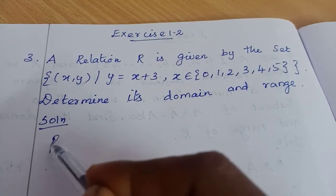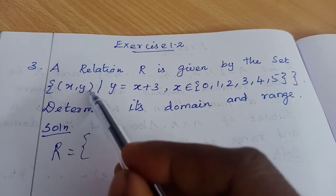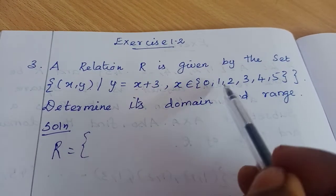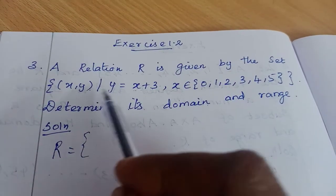First, let me explain the relation. Relation R equals the set of ordered pairs (x,y) where y equals x plus 3. We'll substitute each x value to find the ordered pairs.